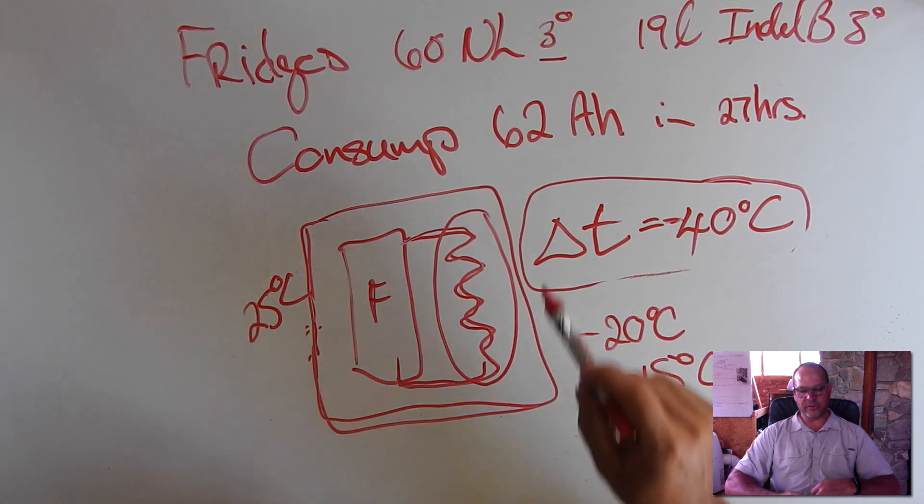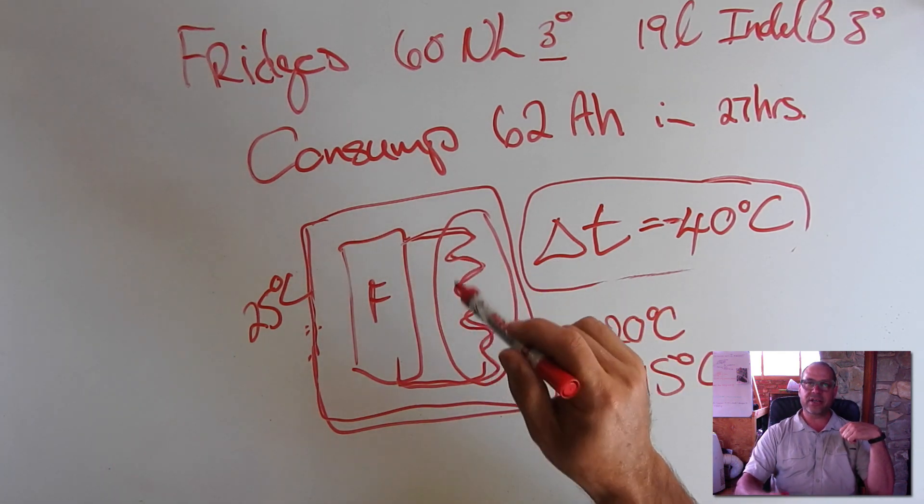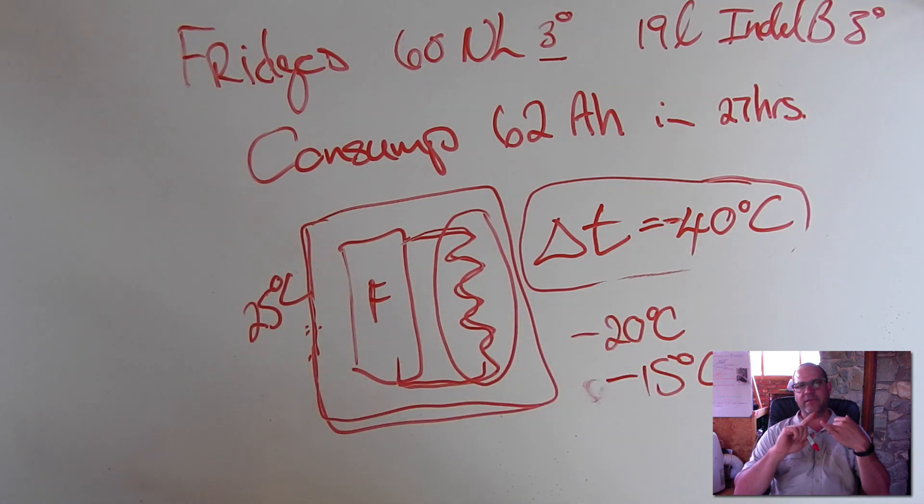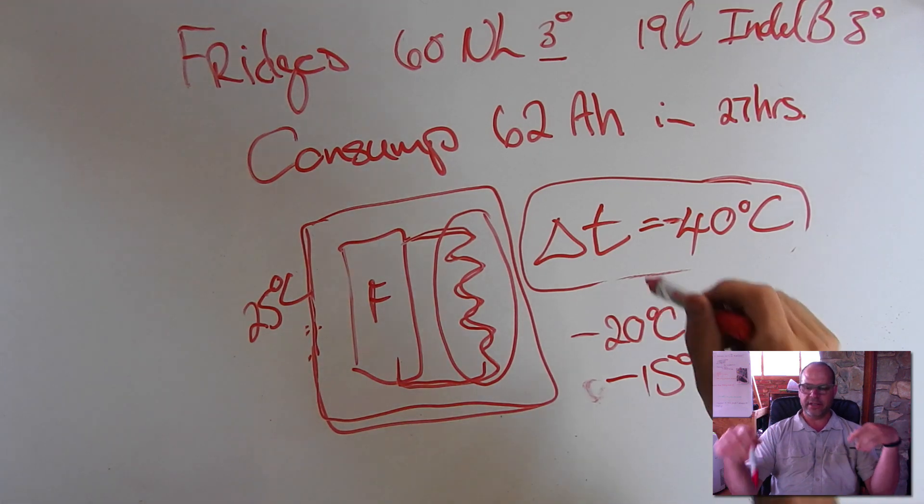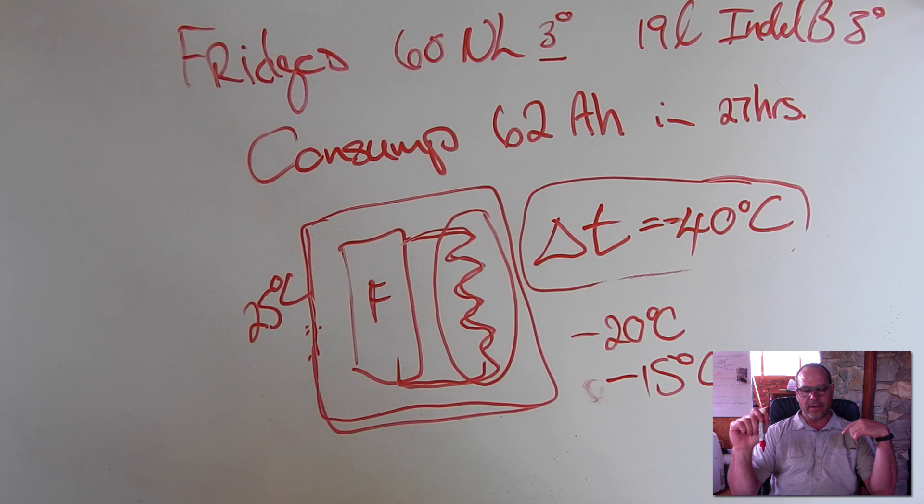So what is critical for the environment of a fridge? One is air flow. You want the air flow to be there. You don't want to close a fridge up and pack blankets and everything on the breathing areas of a fridge, because then the heat exchanger cannot exchange its heat. Very important. The second thing is if you can pack it inside of your vehicle where there's an aircon, then the efficiency of the fridge will be much better.